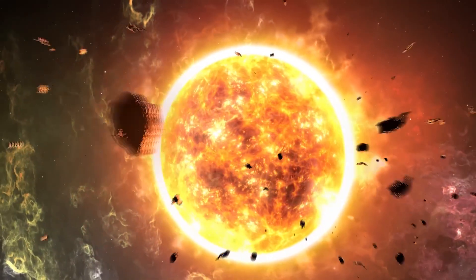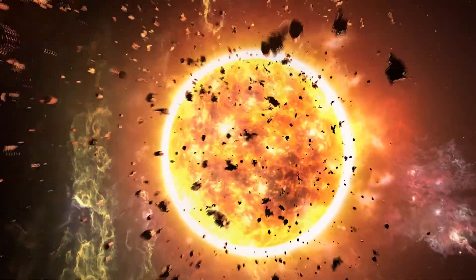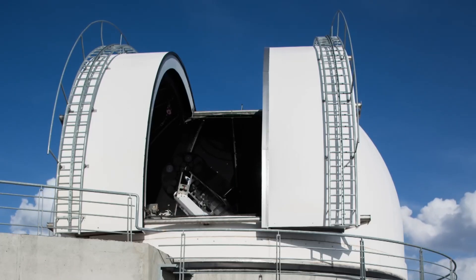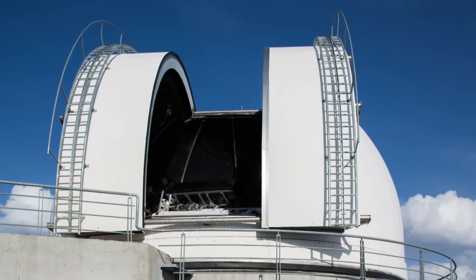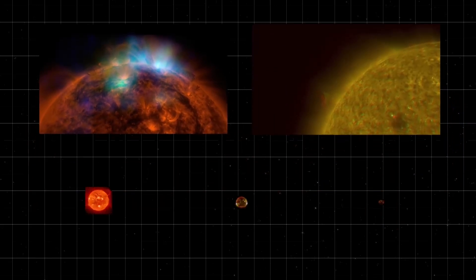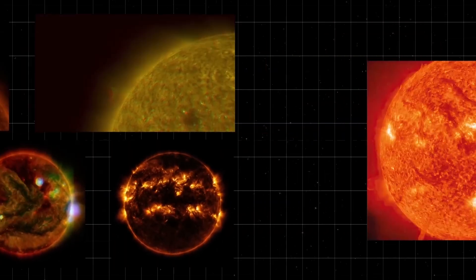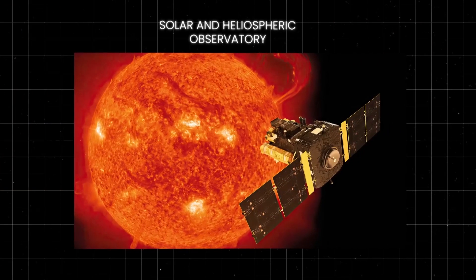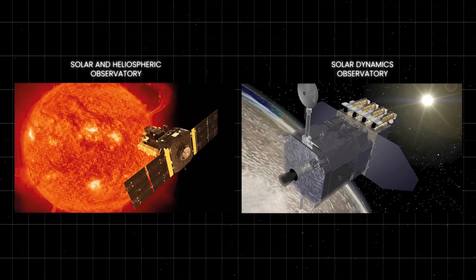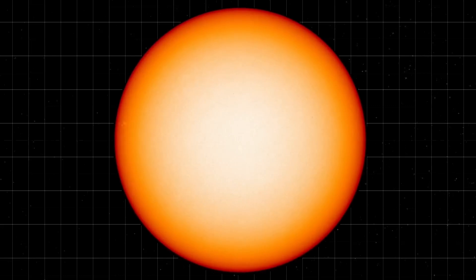When the sun's magnetic poles flip, the effects aren't confined to our star. This magnetic reversal unleashes a wave of solar activity that ripples across the entire solar system, dramatically influencing space weather. At the peak of this process, known as solar maximum, the sun is far more active, producing solar flares and coronal mass ejections at a much higher rate than during quieter periods.